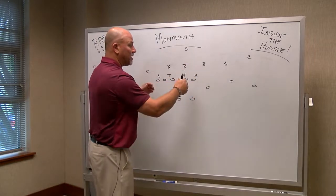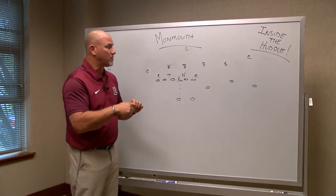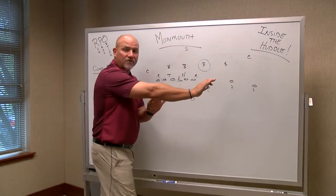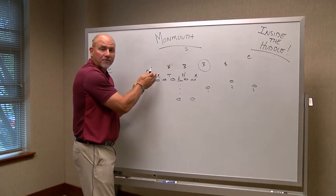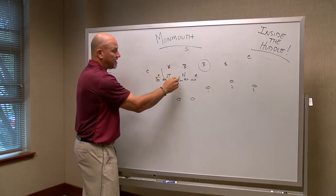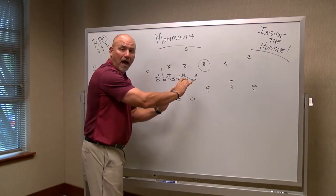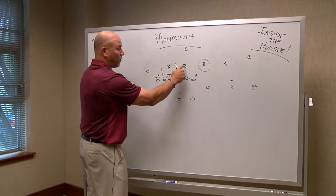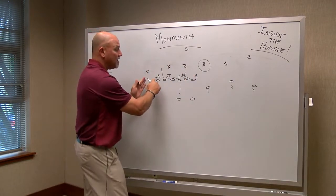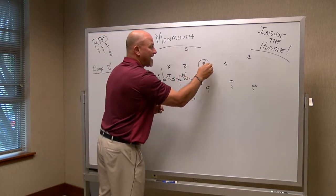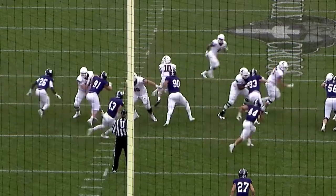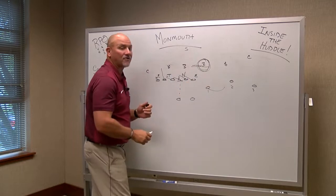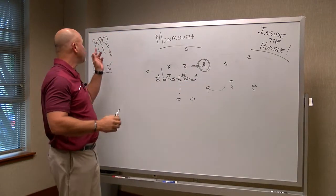What we're trying to do is create conflict for one of their players. If we set the formation to trips — so we have one, two, three receivers to the front side — we also have the run option to the backside. If we want to run, we want to reach everybody and run-block, giving the defense a look of a running play. We count the guys in the box: four, five, six, seven — seven in the box versus six guys up front. We put a guy in conflict. If he adds to the box, it's an easy bubble screen or throw to the front side. Whether he's going to be in the box or outside the box, that is the conflict player — that is the run-pass option.